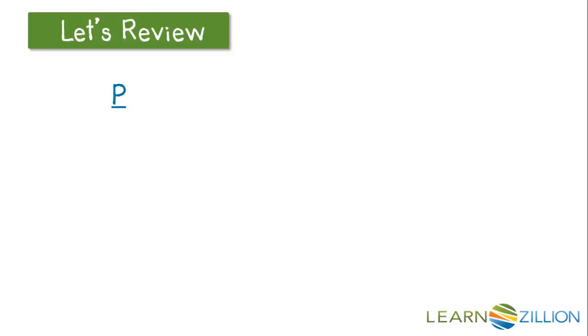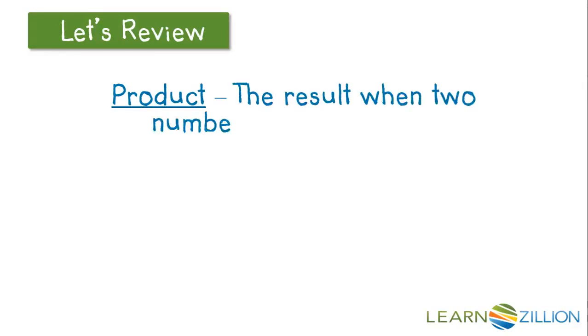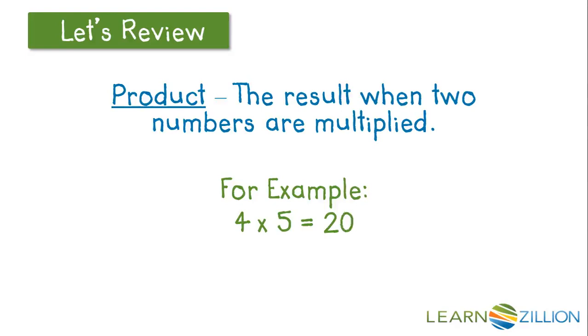Let's review several things. A product is a result when two numbers are multiplied. For example, 4 times 5 equals 20. 20 is the product or the answer to our multiplication problem.